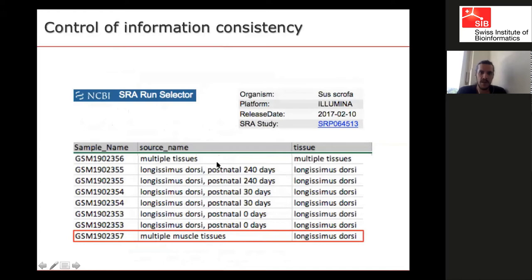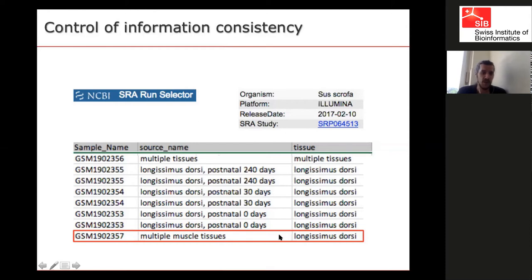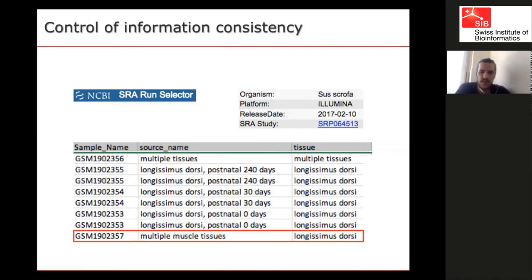Another example from SRA: in the supplementary data, samples had two columns — 'source name' and 'tissue'. One set was consistent, both saying 'longissimus dorsi', but for another, the tissue says 'multiple muscle tissue' which doesn't fit 'longissimus dorsi' as the source name. Here again, we contact the authors, but if we cannot get information or if the information remains suspicious, we just discard the sample.